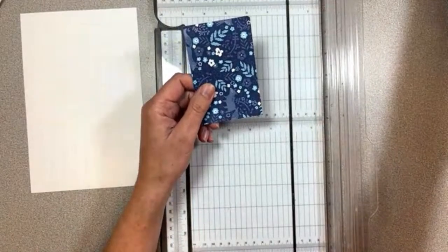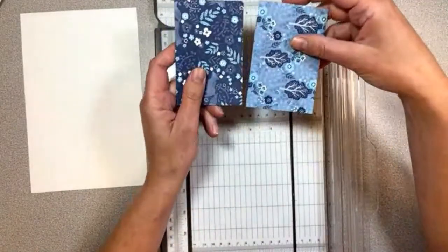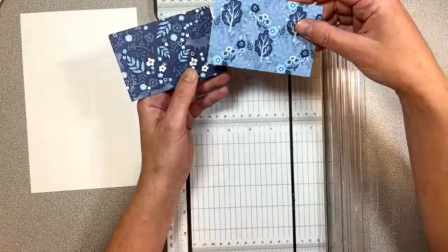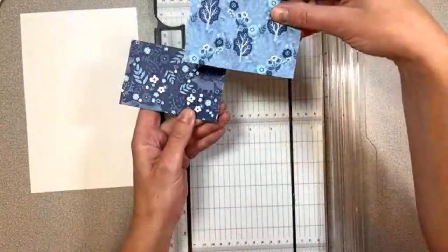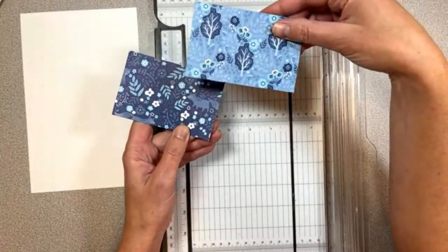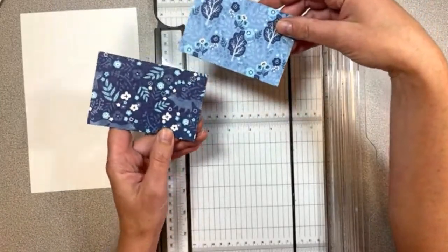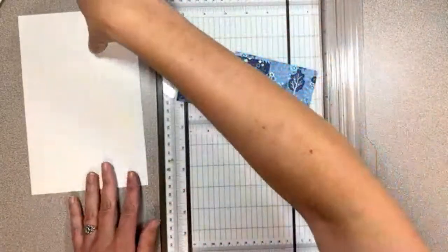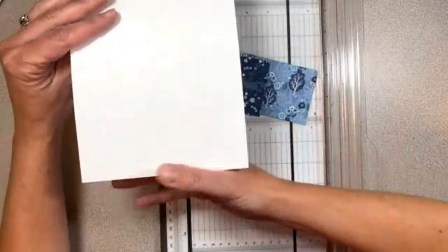This is just our regular half a sheet of cardstock, eight and a half by five and a half, scored in the middle at four and a quarter. The next pieces that we wanted were two pieces of DSP that are four inches by two and five-eighths. Really you could go this way or this way with these pieces. If they have a pattern or if they're non-directional patterns, it'll work either way.